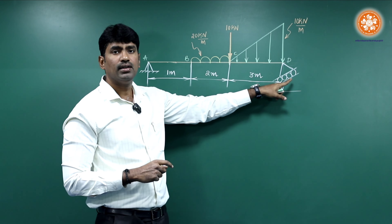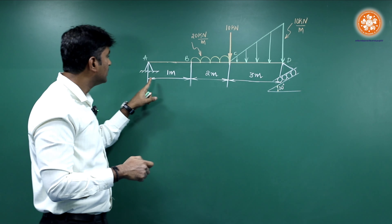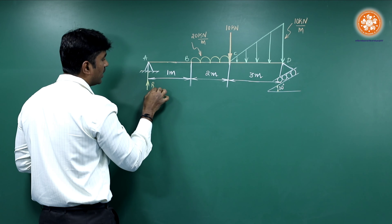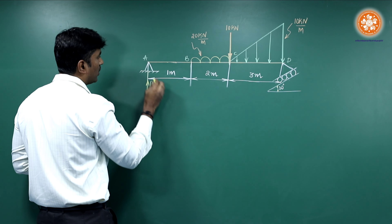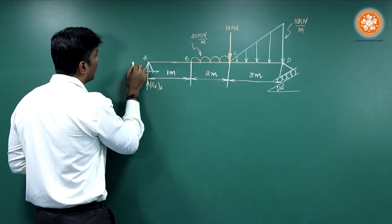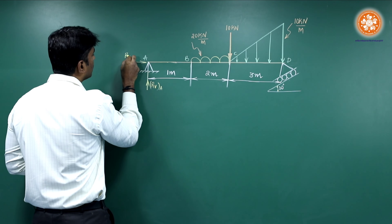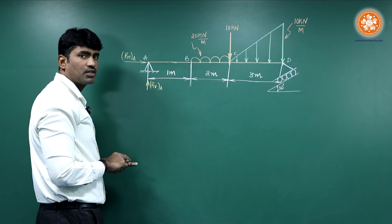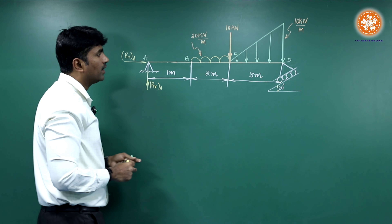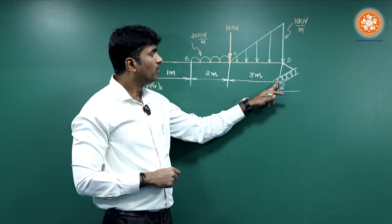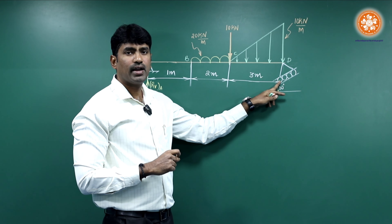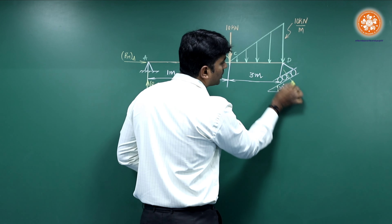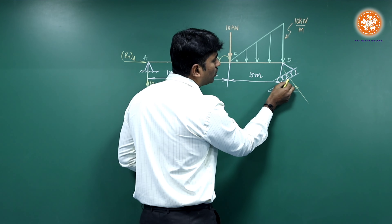The supports are given at either end. This is a hinged support — for a hinged support we have both a vertical reaction and a horizontal reaction at point A. Next we have a roller support. For a roller support we have only a vertical reaction, not a horizontal reaction. The reaction is always normal to the surface and directed towards the surface.